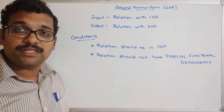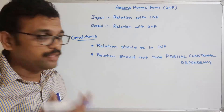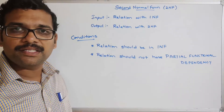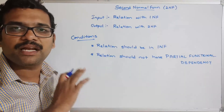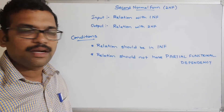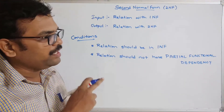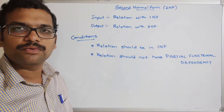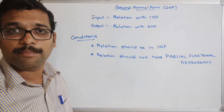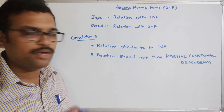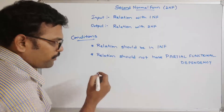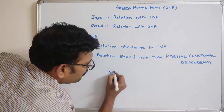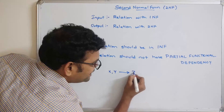In the previous sessions, we discussed functional dependencies, including two different types: fully functional dependency and partial functional dependency. I will post the link in the description — go through that for clarity on partial functional dependency. At a glance, I'll recall the concept. For example, if we have a functional dependency in the format X, Y → Z, then Z is functionally dependent on X and Y.